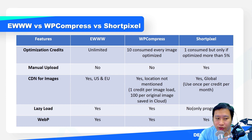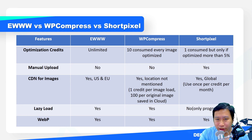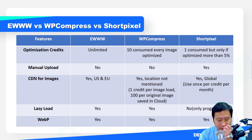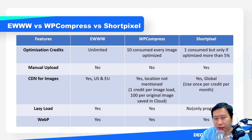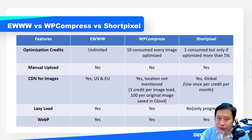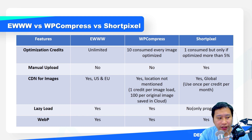For manual upload, Ewww and WP Compress do not have this feature — you can't grab images from somewhere else and upload them to their optimizer. But with Short Pixel, they do have a manual upload feature on their website, and they accept 50 images at a time.